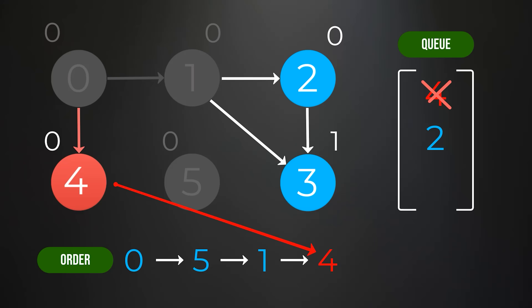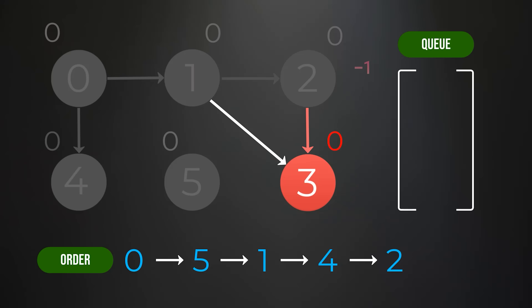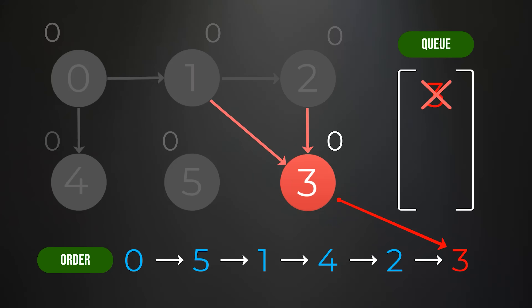Node 4 is removed from the queue and added to the ordering — no nodes depend on node 4, so we move on. Node 2 is removed from the queue and added to the topological ordering. Node 3 depends on node 2, so we decrease its indegree count to 0 and add it to the queue. Finally, we remove node 3 from the queue and add it to the ordering, and we're done. We have successfully calculated the topological order of this graph using Kahn's algorithm.